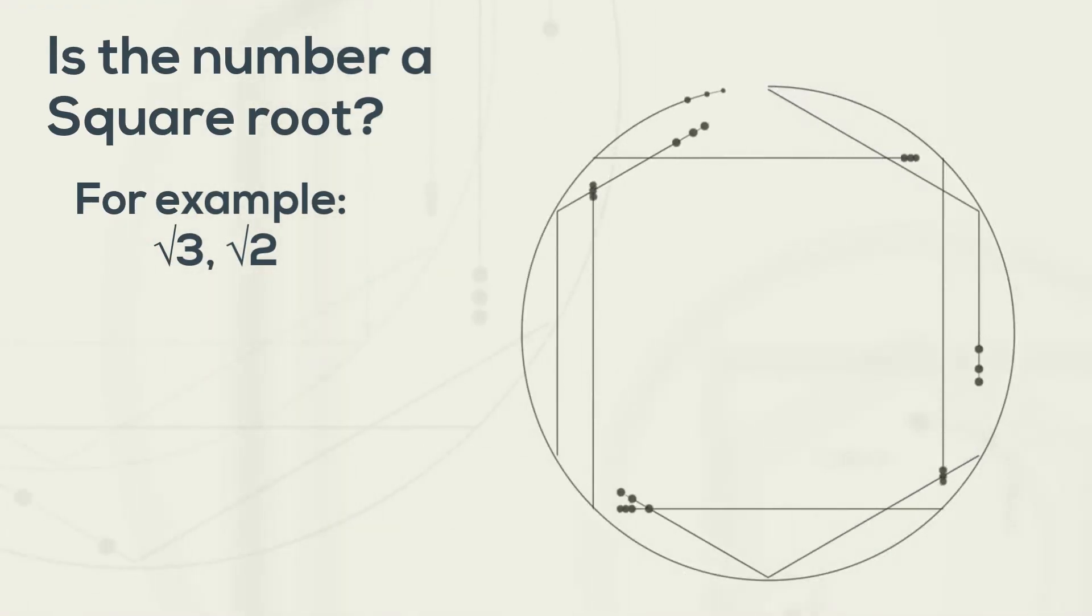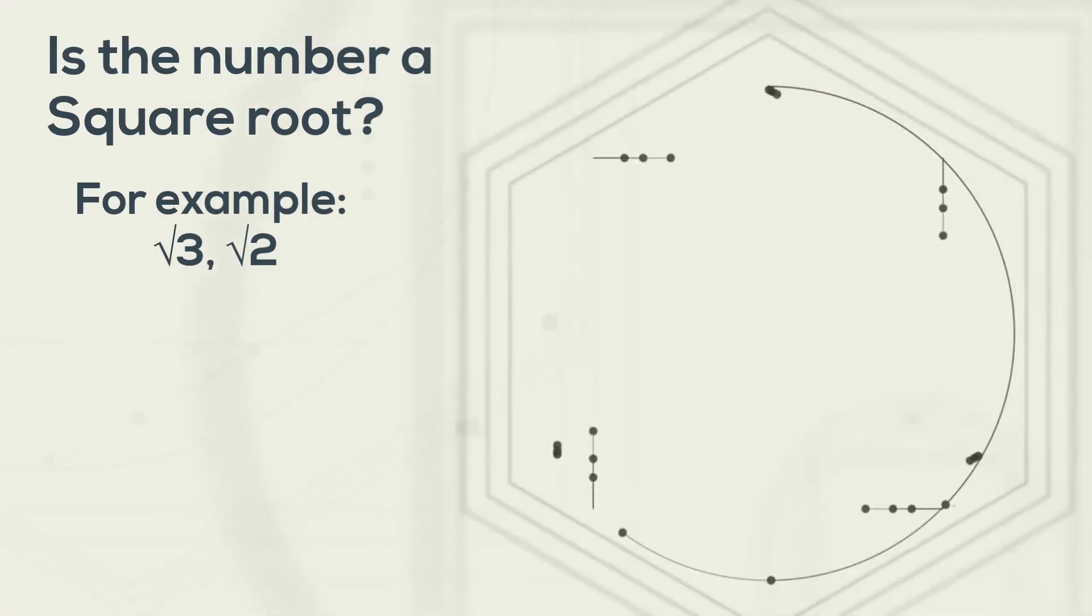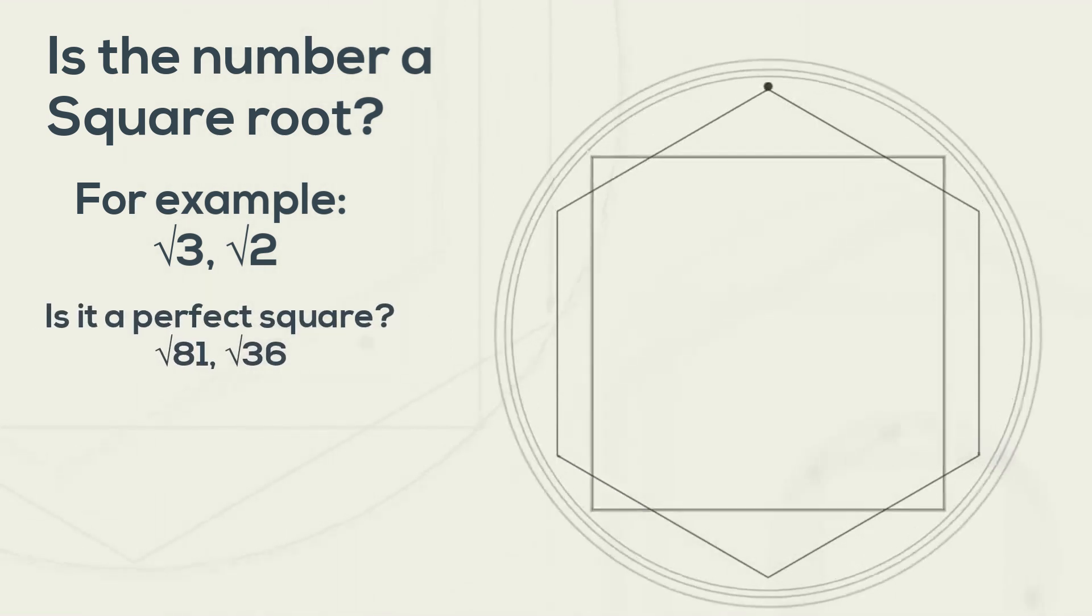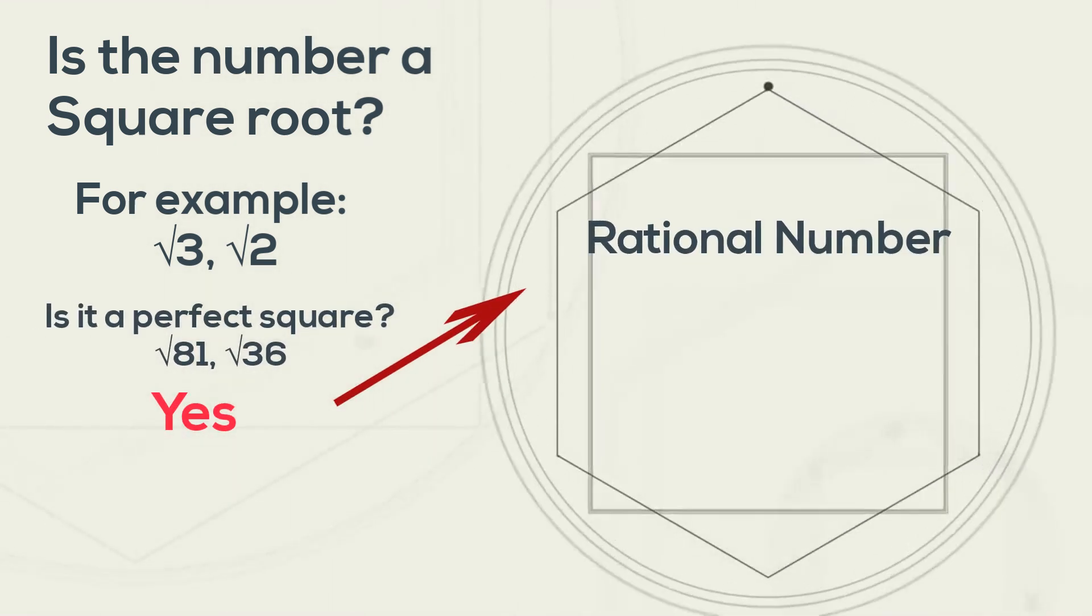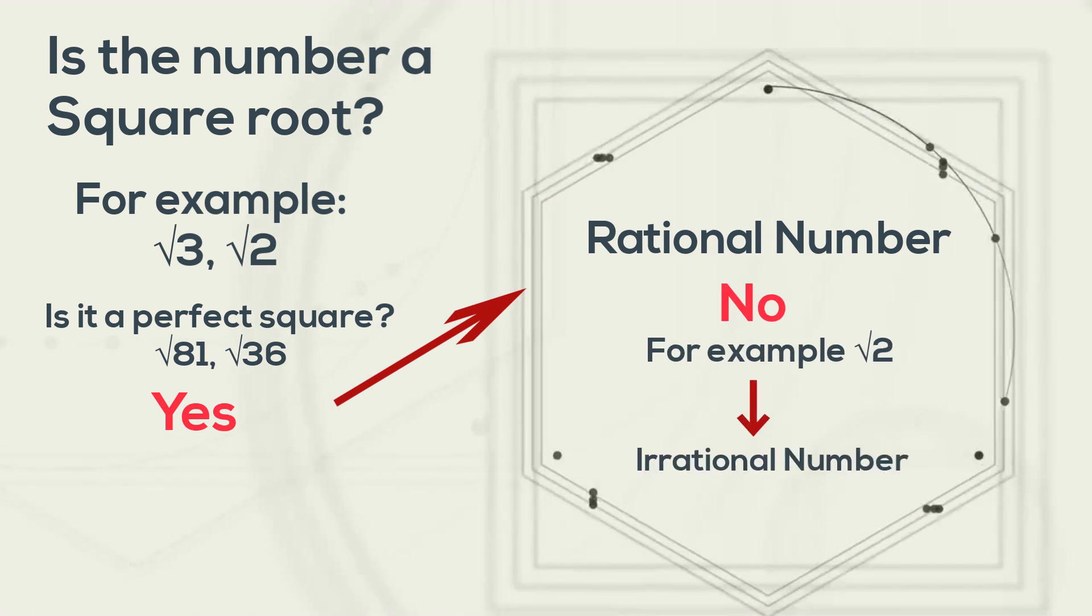If it is a square root, then ask, is it a perfect square? Yes, it is a rational number. No, then it is irrational.